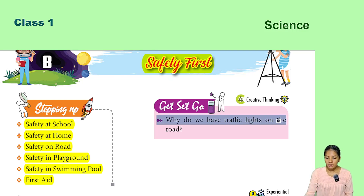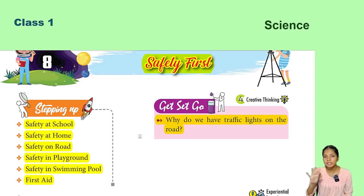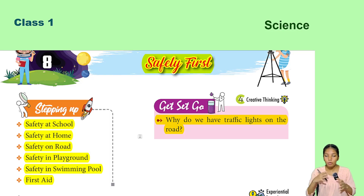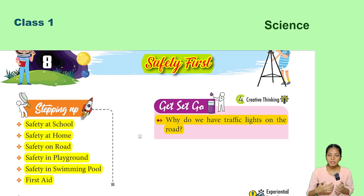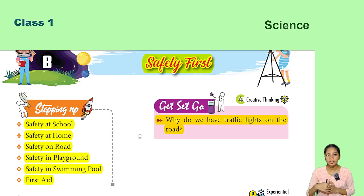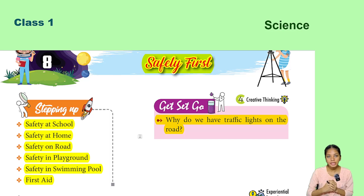Why do we have traffic lights on the road? We go to the road and see traffic lights. Traffic lights give us an indication of when we have to walk and when to stop. This is why traffic lights are important.